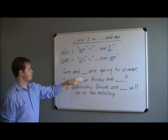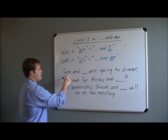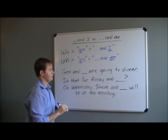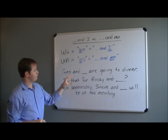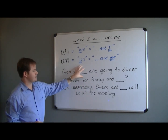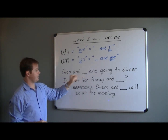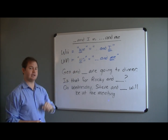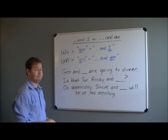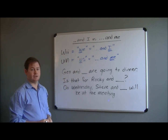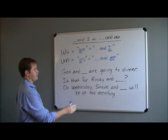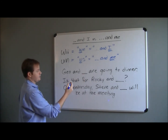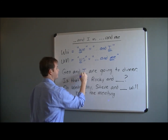Let's try these examples out. 'Geo and blank are going to dinner.' If we replace 'Geo and blank' with 'we' or 'us,' which one fits? If you said 'we,' you are correct — it should be 'we are going to dinner,' which means in this case we use 'and I.'